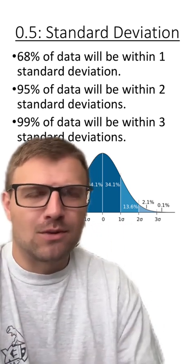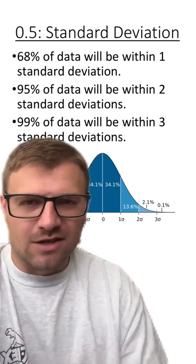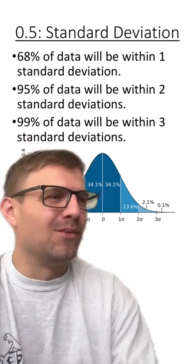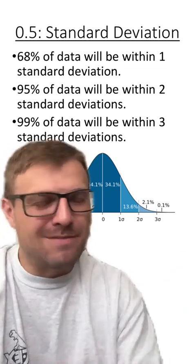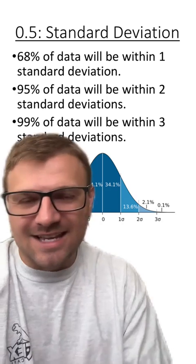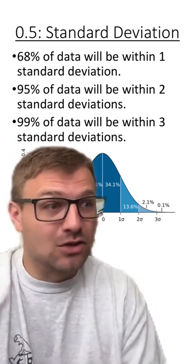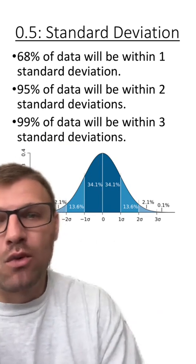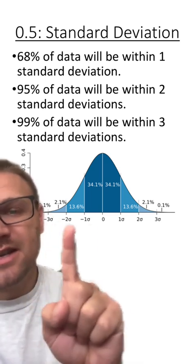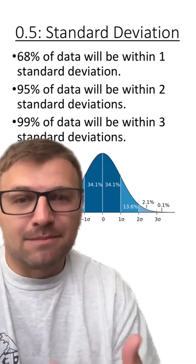At this point, you might be wondering how do we know how much each percent falls within each standard deviation. That kind of math is way above the material for an AP Biology class, but this is just backed with data and math and science. If you're interested, look this up and do a little more research. We can go one step further and look at three standard deviations, and within three standard deviations of the mean, there's going to be 99% of the data.